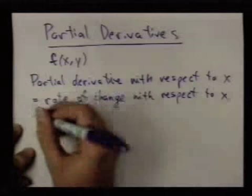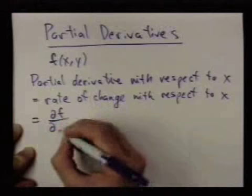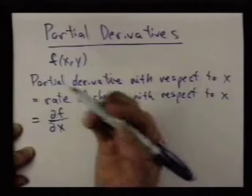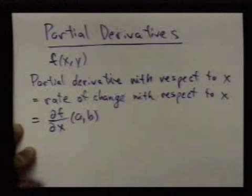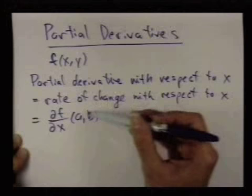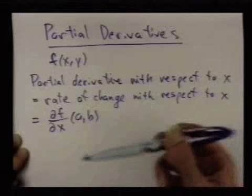And we write this using the notation. We use these strange curly d's. So the partial derivative with respect to x of the function f at a point a, b, the definition of this, well, the idea is we're going to keep all of the y values equal to b and let x vary and take a derivative of that function at a.